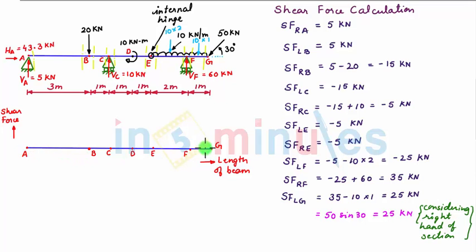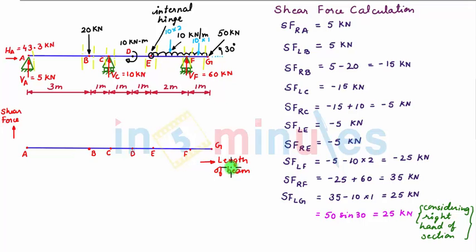We plot the horizontal line for the shear force diagram and we plot all those salient points A, B, C, D, E, F and G. On the y-axis we have shear force and on the x-axis we have the length of the beam. Positive shear force will be above the horizontal line and negative shear force will be below this horizontal line.